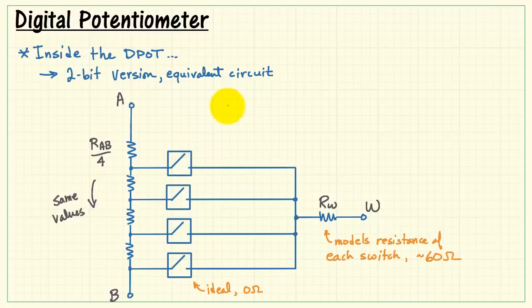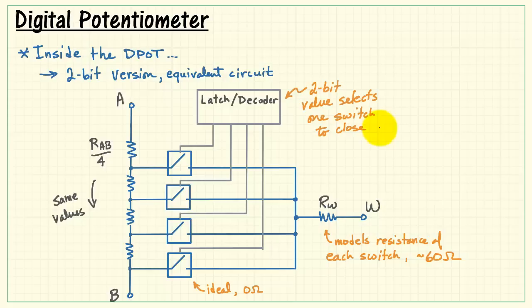Now each of these is actually an electronically controlled solid-state switch, and it's operated by a latch that stores, in this case, the 2-bit digital value, and that selects exactly one switch to close using the decoder.